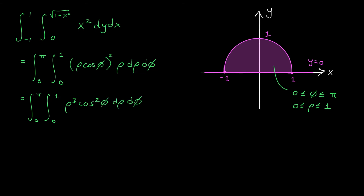Let's take a moment to appreciate what we've just done. Our new integrals have constant bounds — we're integrating over a very nice polar rectangle, which is very different from before where our bound was a nasty function of x. Our function, rho cubed cos squared phi, is also pretty nice: it splits into a rho part and a phi part. So I can actually write this as the integral from 0 to pi of cos squared phi d phi, times the integral from 0 to 1 of rho cubed d rho.